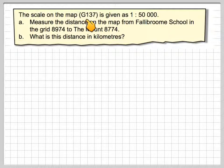The scale of the map on G137 is given as 1 to 50,000. Measure the distance on the map from Fallibroome School in grid 8974 to The Mount 8774.